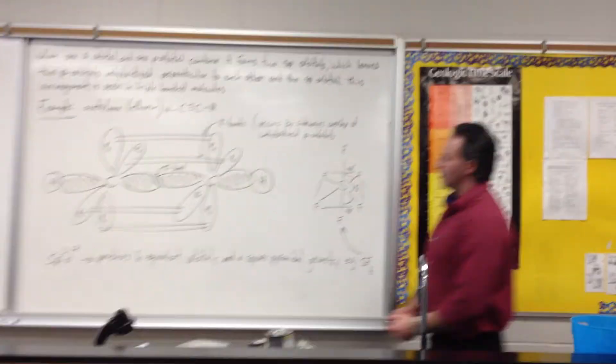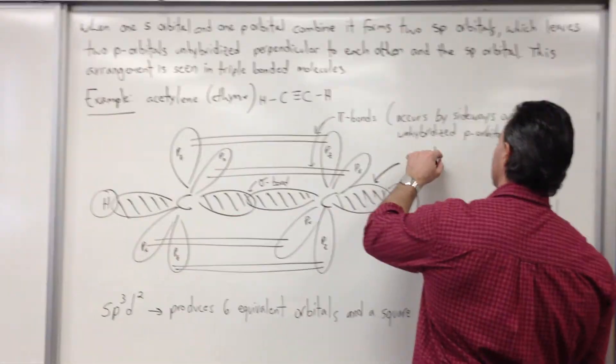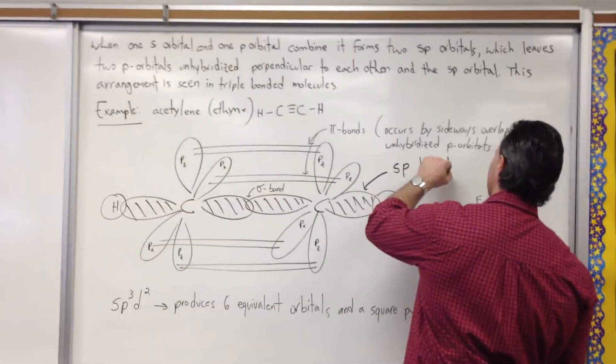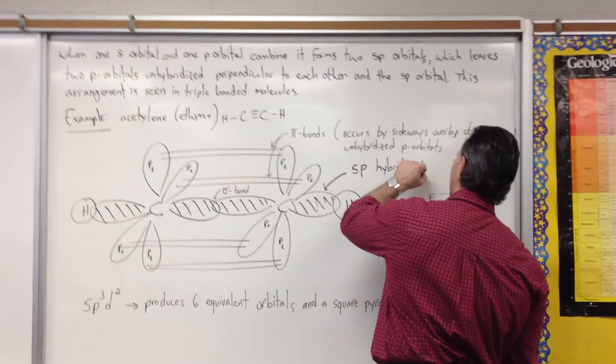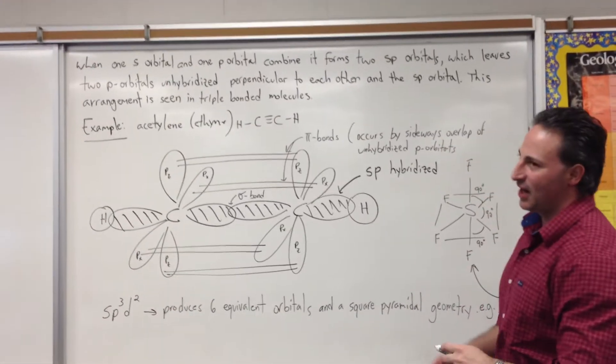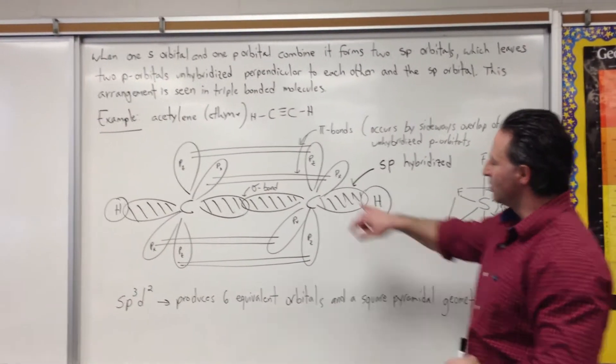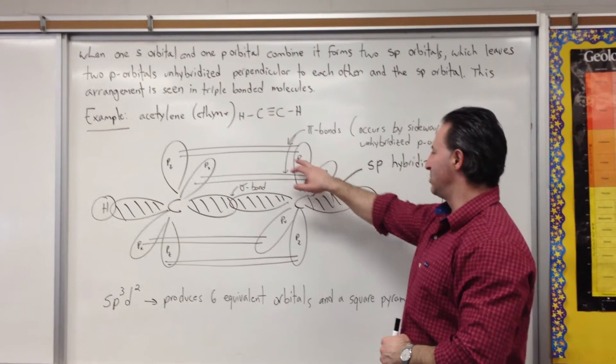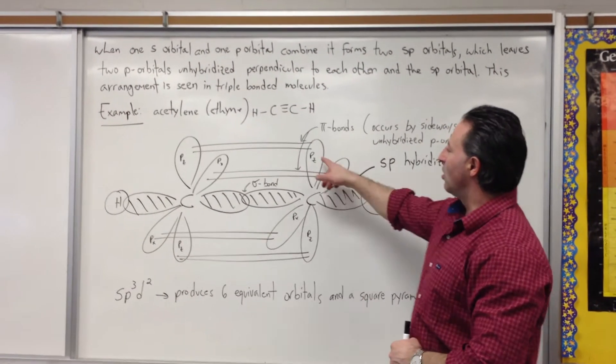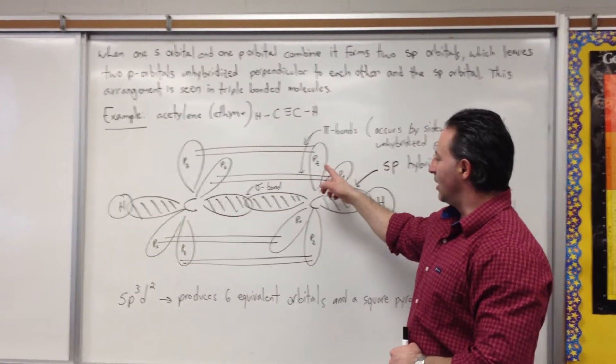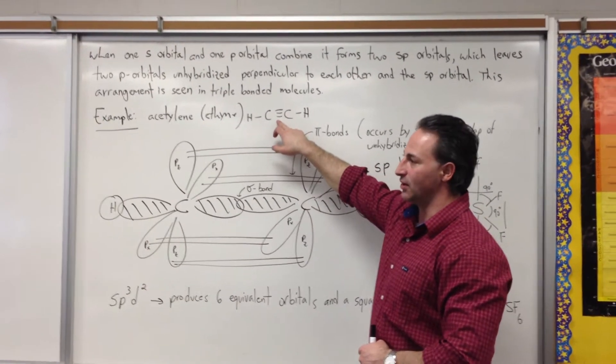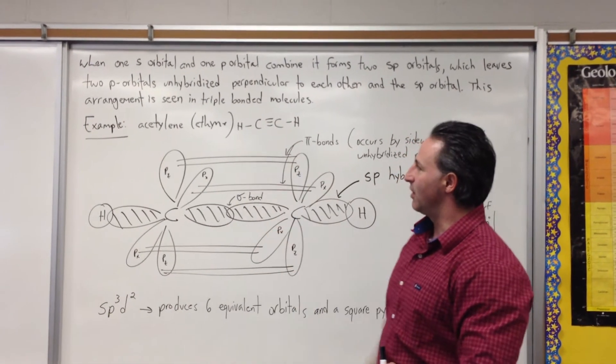If you hybridize one s orbital with one p orbital, you get sp hybridized carbon. And the sp hybridized carbon is going to leave two orbitals unhybridized, pz and px. These two also overlap sideways, and you get that in a triple bond. Acetylene has that kind of hybridization.